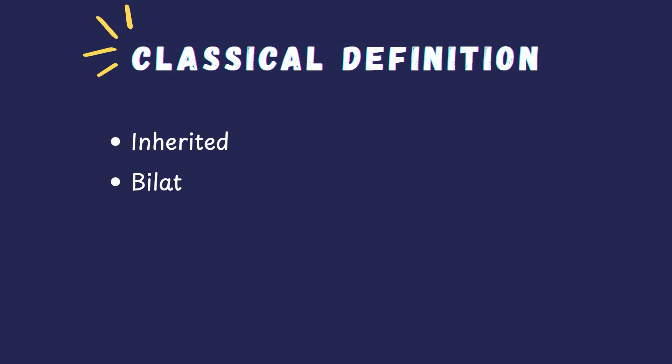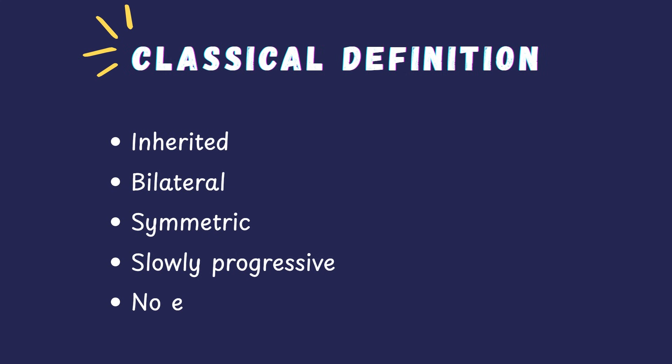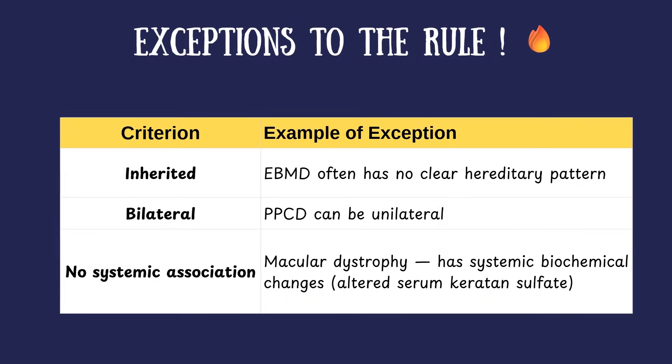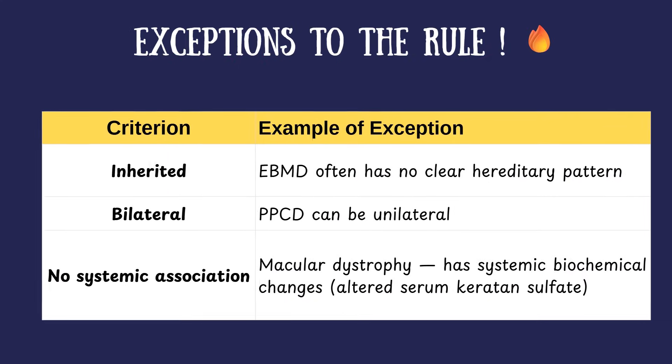So what exactly is corneal dystrophy? Traditionally, it is defined as a group of inherited corneal diseases that are bilateral, symmetrical, slowly progressive in nature, and not related to environmental or systemic factors.